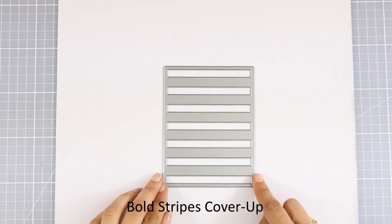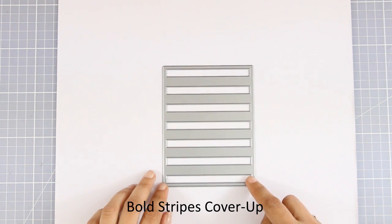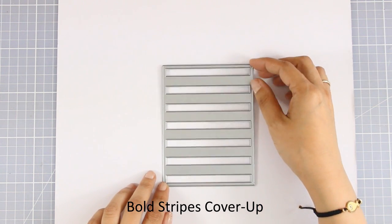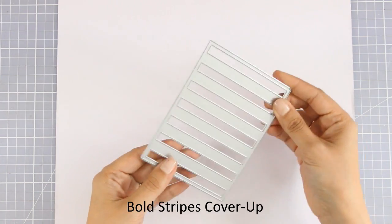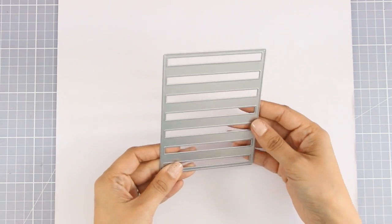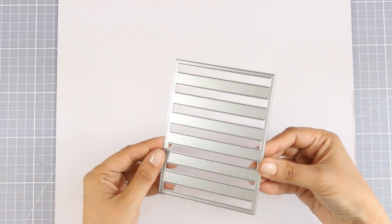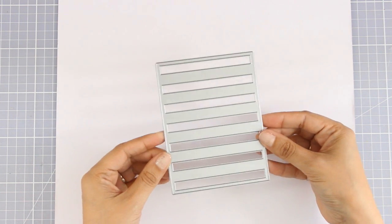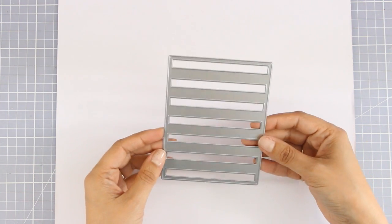And now let's move on to a bigger die. This is called Bold Stripes Cover Up. It's a fun way to create a lovely background for your cards - it's going to cut out those windows in between, and there are so many ways to use them by using the inlay technique or you can stamp sentiments in between. It's a fun way to create an interesting background for your cards.